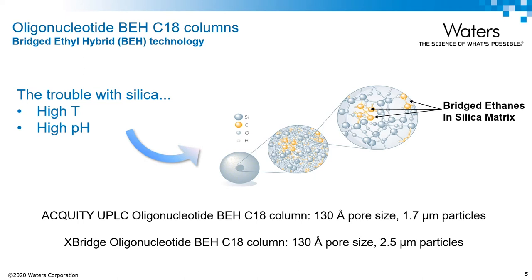Before we go into further details of how to select an ion pairing agent, let's consider a few tools that can aid in our separations. Oligo separations are generally run under elevated temperatures and high pH, which is a problem for silica stationary phases. Although silica is favored for its high efficiency and mechanical strength, high pH hydrolyzes silica particles and leaves voids in the packed bed. Bridged ethylene hybrid, or BEH technology, launched in 2005, brought in an operable pH from 1 to 12 at elevated temperatures without compromising column performance and lifetime. The BEH particles are prepared from two highly pure monomers that form an ethylene bridge copolymer distributed uniformly throughout the backbone. These Oligo BEH columns will be used throughout the presentation.